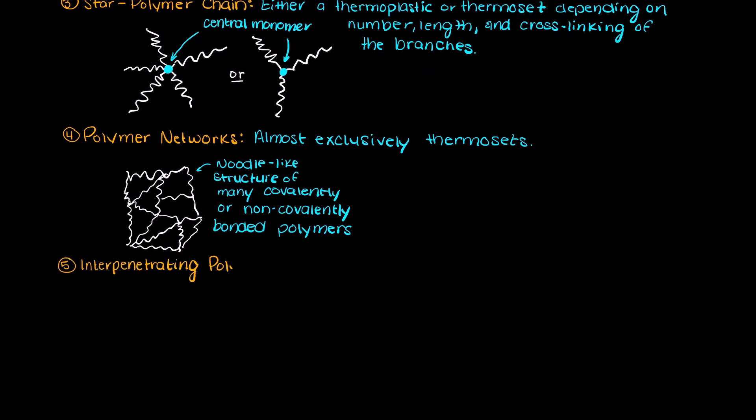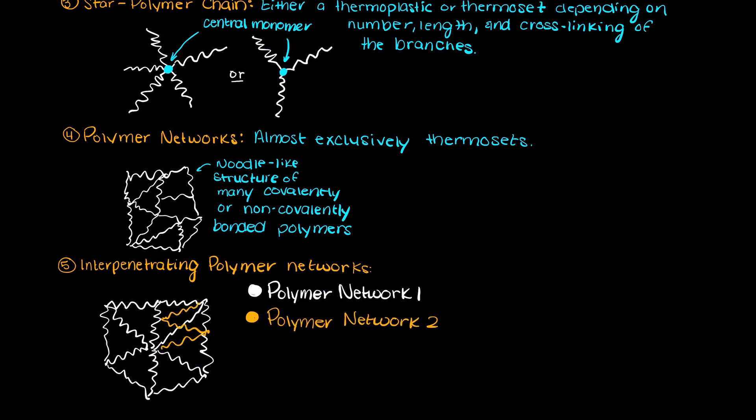Lastly, we could have interpenetrating networks. These types of polymer chain structures consist of multiple polymer networks further intertwined within one another.